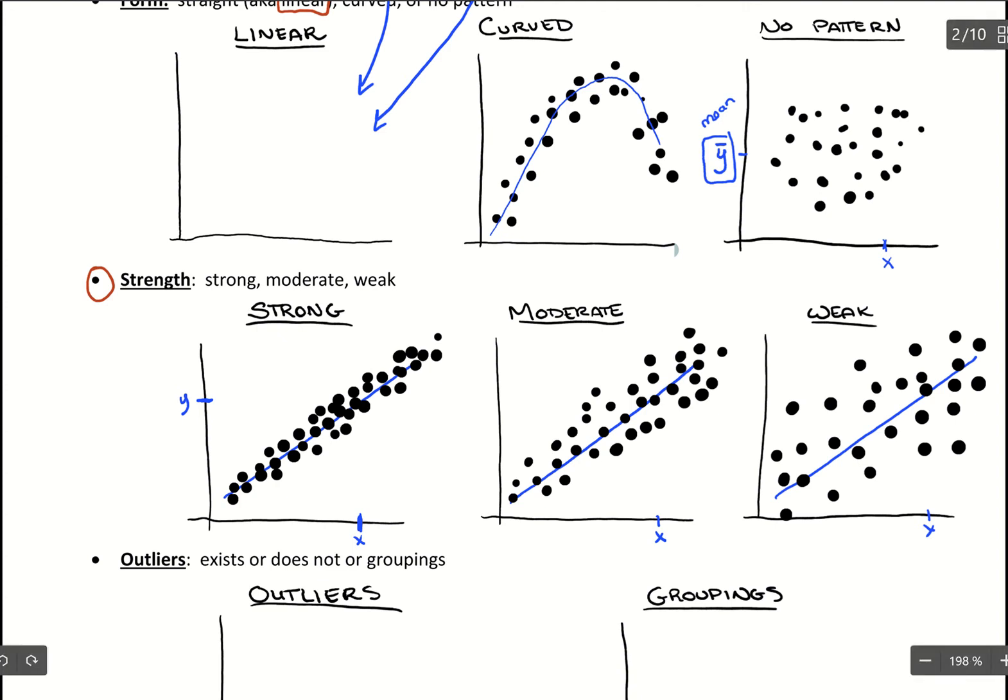Whereas when we get to the moderate case, maybe we'd have that same prediction for Y coming from our line, but it's a little more scattered, so we'd lose a little confidence in that prediction for Y.